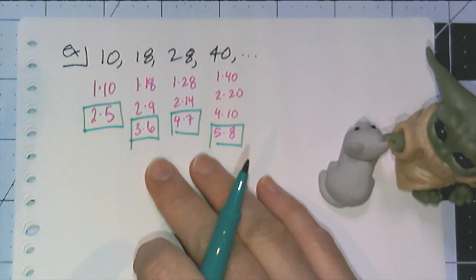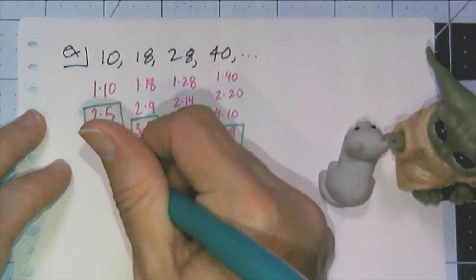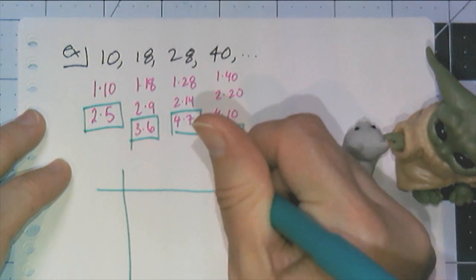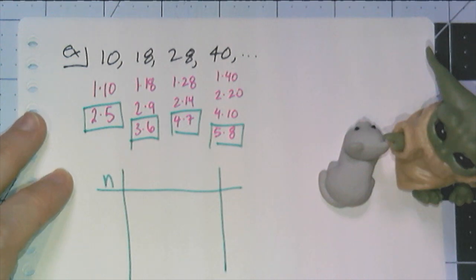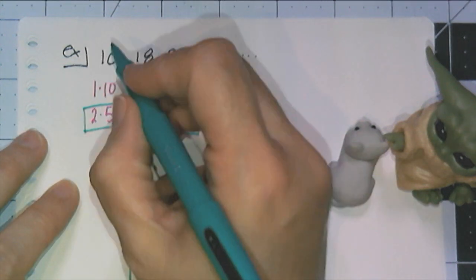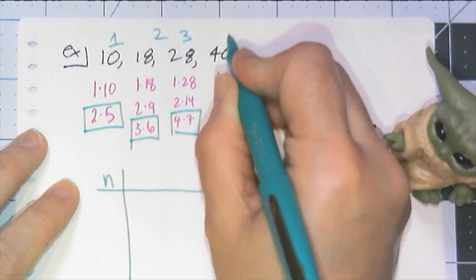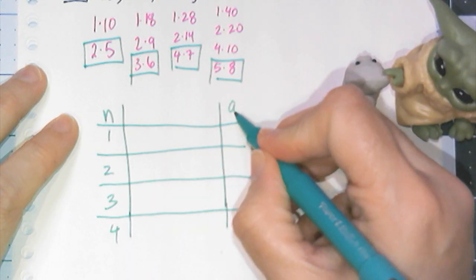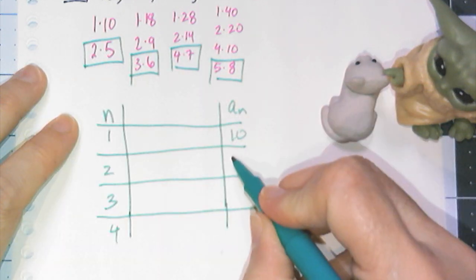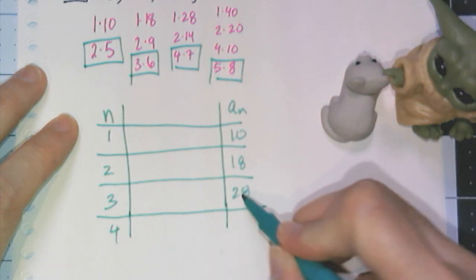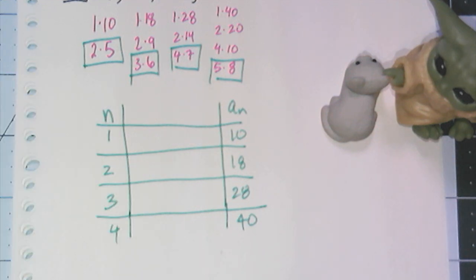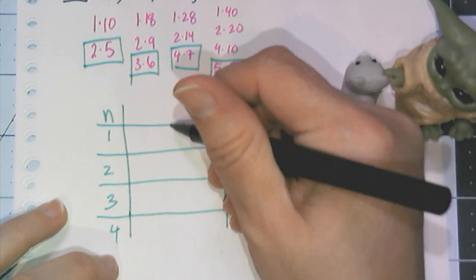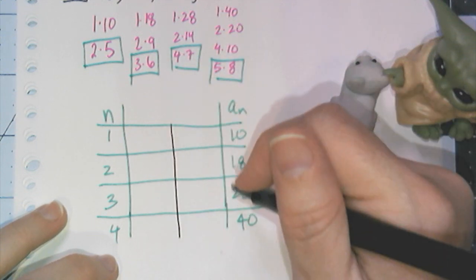So I'm going to arrange everything in a table. It's going to be kind of a long table here. So n, remember from sequences, is the term number. This is the first, second, third, fourth term. So I have my table there. And a sub n are my actual sequence values: 10, 18, 28, and 40. So all I did was I wrote down the values I have from the sequence and the term number that correlates to it.